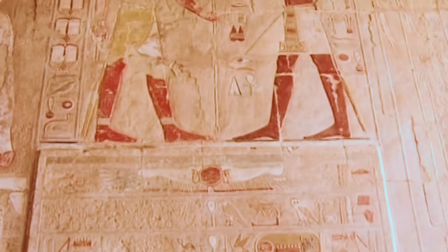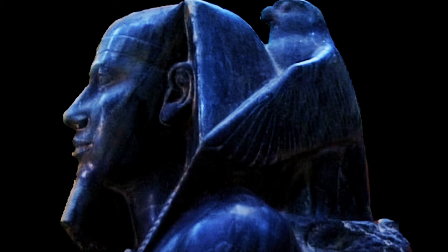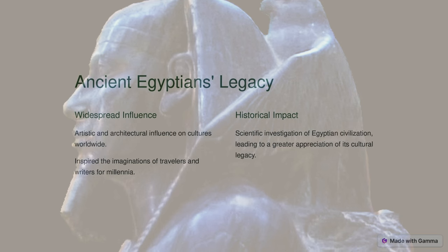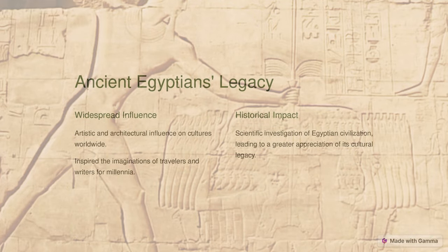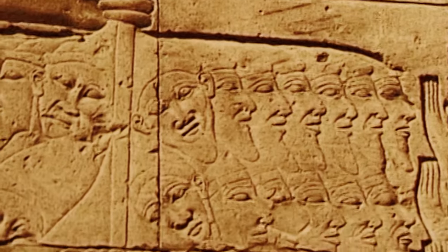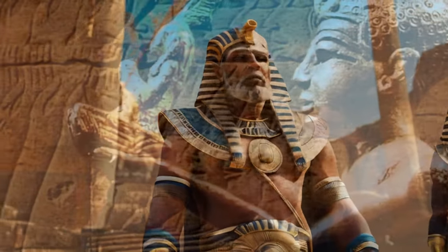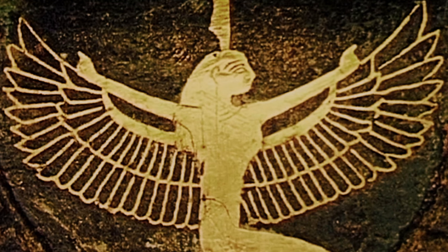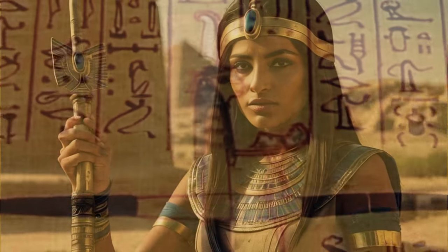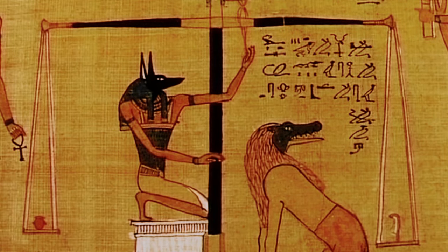The many achievements of the ancient Egyptians include quarrying, surveying, and construction techniques that supported the building of monumental pyramids, temples, and obelisks; a system of mathematics; a practical and effective system of medicine; irrigation systems and agricultural production techniques; the first known planked boats; Egyptian faience and glass technology; new forms of literature; and the earliest known peace treaty made with the Hittites. Ancient Egypt has left a lasting legacy. Its art and architecture were widely copied, and its antiquities were carried off to far corners of the world. A newfound respect for antiquities in the early modern period has led to the scientific investigation of Egyptian civilization and a greater appreciation of its cultural legacy.